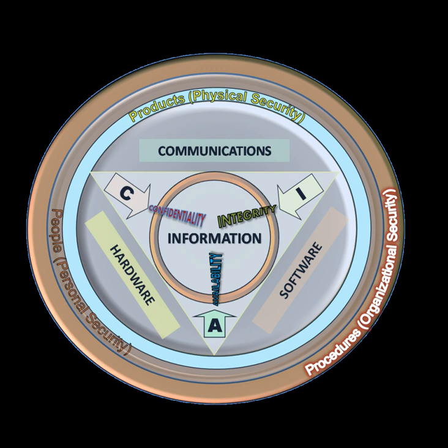Physical controls monitor and control the environment of the workplace and computing facilities. They also monitor and control access to and from such facilities and include doors, locks, heating and air conditioning, smoke and fire alarms, fire suppression systems, cameras, barricades, fencing, security guards, cable locks, etc. Separating the network and workplace into functional areas are also physical controls. An important physical control that is frequently overlooked is separation of duties, which ensures that an individual cannot complete a critical task by himself. For example, an employee who submits a request for reimbursement should not also be able to authorize payment or print the check. An applications programmer should not also be the server administrator or the database administrator.